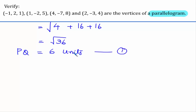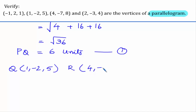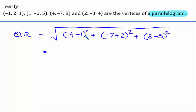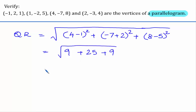Now let us consider Q as (1, -2, 5) and R as (4, -7, 8) and find distance QR. It is: 4 minus 1 is 3, squared is 9; minus 7 plus 2 is minus 5, whole square is 25; plus 8 minus 5 is 3, whole square is 9. So it is 25 plus 18 which is root 43. This is QR.